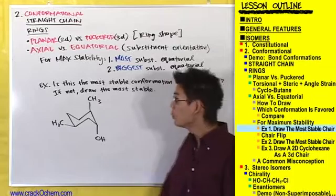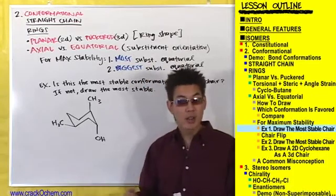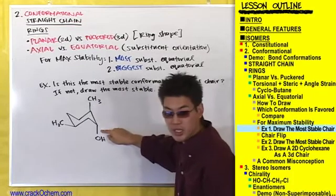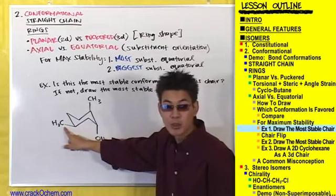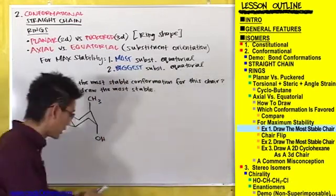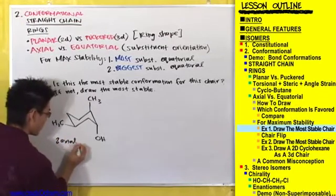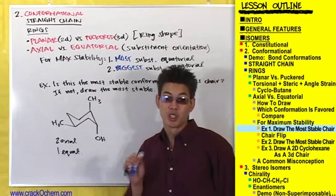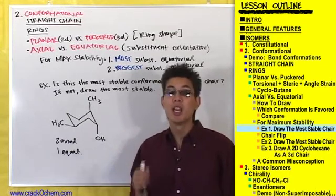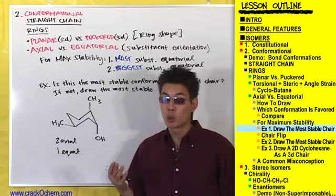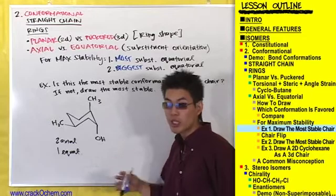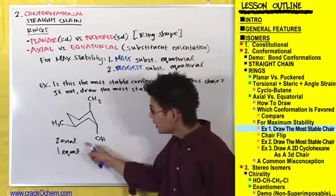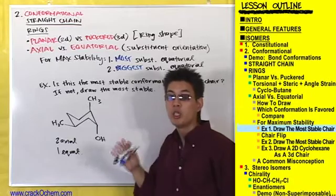The first rule is that we want the most substituents to be equatorial. Let's count how many are axial and how many are equatorial. This CH3 is axial and this OH is axial — that's two axials. This CH3 right here is equatorial. So we've got two axials and one equatorial, which is bad news. We'd rather have two equatorials and one axial, so to change these two axials to equatorial substituents, we do something called a chair flip.